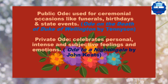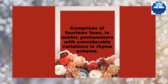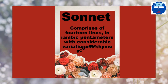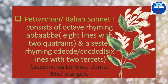Sonnet comprises of 14 lines in iambic pentameters with considerable variations in rhyme scheme. Sonnet has further three types. The first one is Petrarchan or Italian sonnet. It consists of an octave, which means eight lines with two quatrains. Quatrain means four lines. Eight lines are further broken into two parts with four lines each. The rhyme scheme of the octave will be ABBAABBA. And a sestet, which means six lines with two tercets. Tercet means three lines. Six lines will be broken into two parts having three lines each.